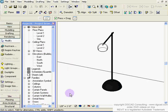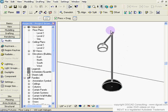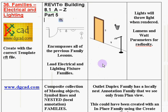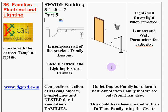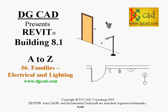The last step is to go into rendering settings, add lights, and assign lighting groups to the lighting objects placed in the project. Thank you for tuning in to another DGCAD lesson on electrical families and lighting. Hopefully this helps clear up some of the confusion around how electrical symbols and lighting families behave in Revit.